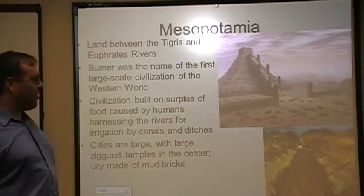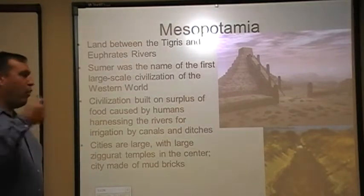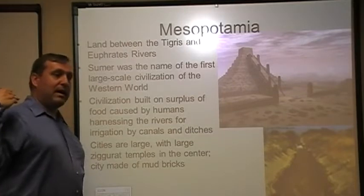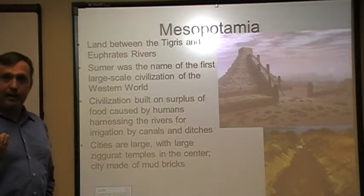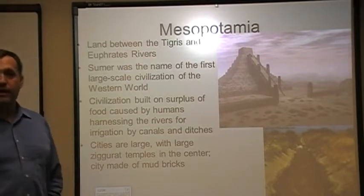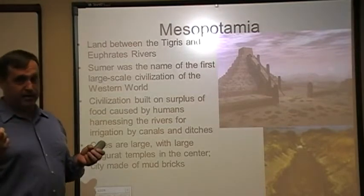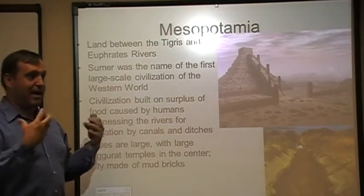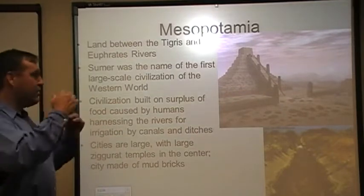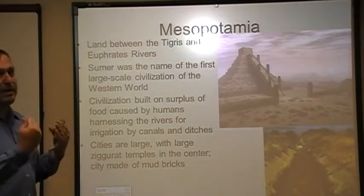Sumer is going to be the name of the first large-scale civilization, at least of the Western world. One of the things you've got to have in order to have a civilization is a surplus of agriculture — a surplus of food. People have to be making more food than they themselves and their family can eat. So what are you going to do with the surplus? If everybody's farming and everybody's making more than they can eat, nobody's buying it. So some people pull themselves out of agriculture and say, 'I'll take the leftover food and I will build houses, or work on technology, or build roads.' That's division of labor. The farmer gets so efficient that he can feed more people than himself and his family.